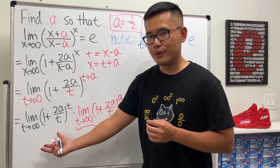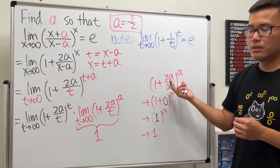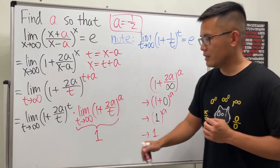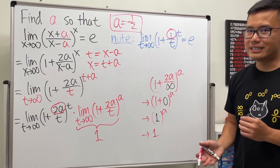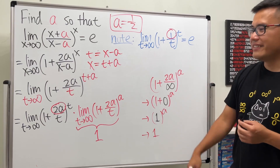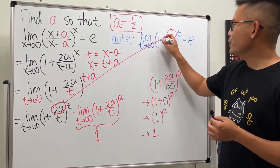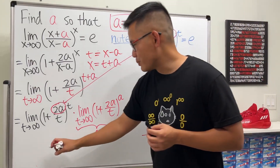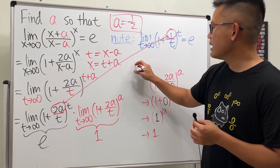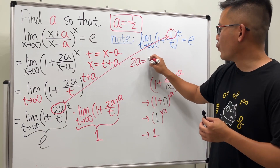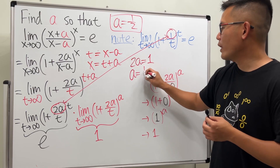Now for the remaining factor, it's almost the same as the definition of e — except here we have two a where the definition has one. This is the key connection: we need two a to equal one. Under that assumption, the limit of one plus two a over t to the t-th power equals e. So two a equals one means a equals one half, and we are done.